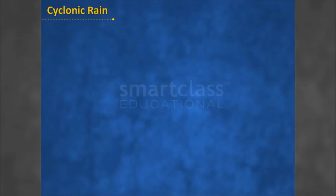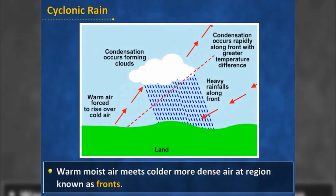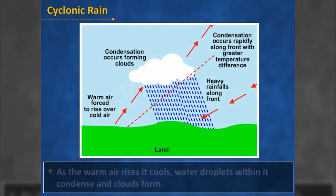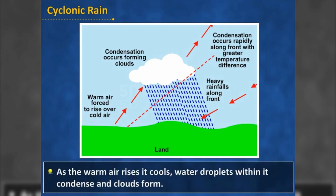Cyclonic rain: warm moist air meets colder, more dense air at a region known as a front. As the warm air is less dense and has more energy, it is forced to rise above the colder, denser air. As the warm air rises, it cools, water droplets within it condense, and clouds form.